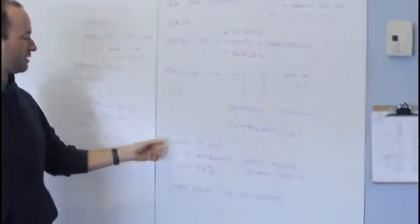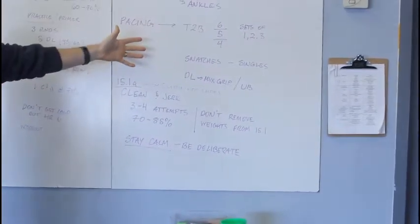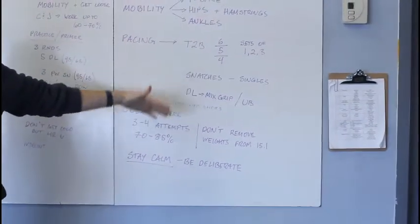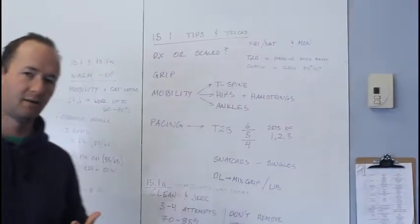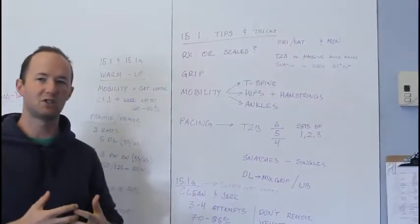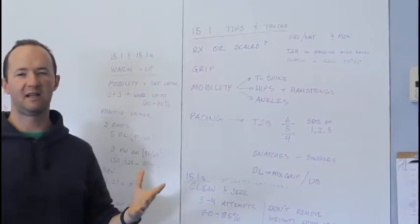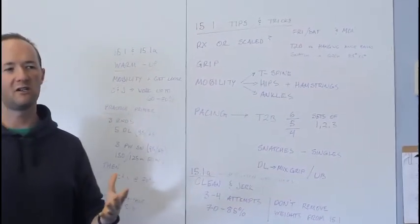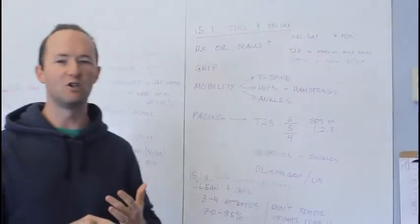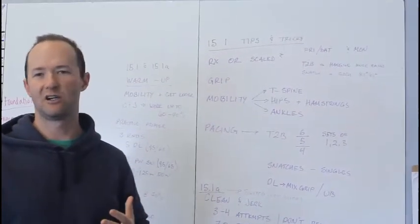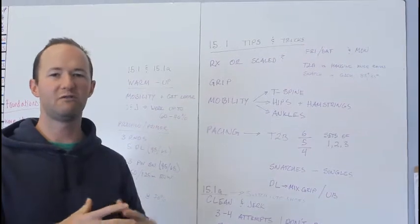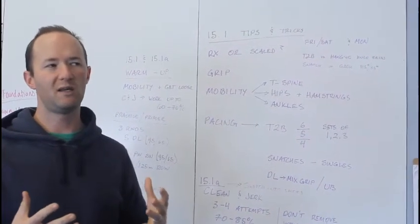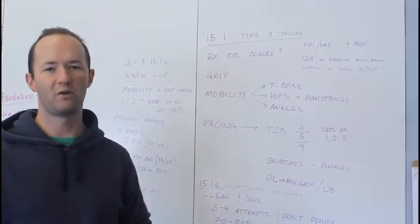All right, and then finally for 15.1A, once we're done with the nine minutes of this workout, then we immediately go into 15.1A. You're going to use the same bar and you're going to try to establish a one rep max clean and jerk. A couple of things that you're going to notice. One, this is not going to be a new one rep max. You're going to be tired, you're going to be pre-fatigued. This is going to be like a high percentage of your one rep max.